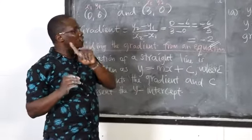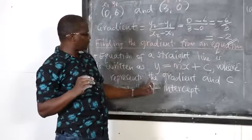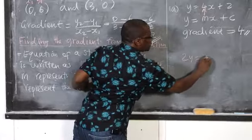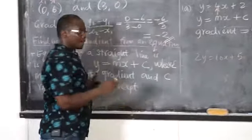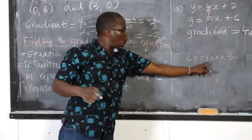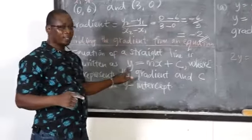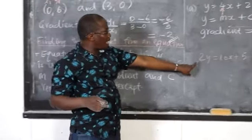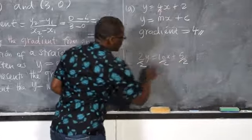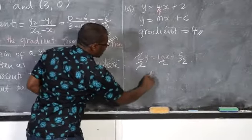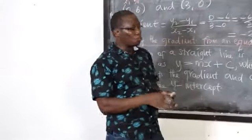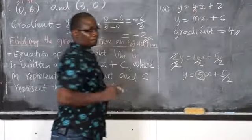Take note: you need to make y the subject of the formula first. From the equation, we have 1y. At times, for example, they can write 2y equals to 10x plus 5. At this point, you are wrong to say the gradient is 10, because what you have is 2y, but it should be 1y. So what you need to do is divide everything by the coefficient of y — divide by 2, divide by 2, divide by 2 — so that the 2 cancels. Now you have y equals to 5x plus 5 over 2, and from here your gradient is 5. That is very, very important.